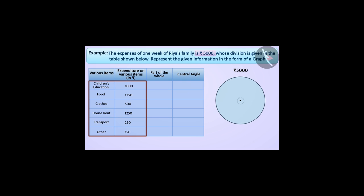The whole here is Rs 5000, therefore in the pie chart the angle of 360 degrees at the centre of the circle will denote Rs 5000. With this understanding, we will find the central angle representing the expenditure on all items. The expenditure on the education of children is Rs 1000, which is 1/5 of the total, so its central angle will be 1/5 of 360 degrees, which equals 72 degrees. Similarly, the expenditure on food is Rs 1250, which is 1/4 of the total, so its central angle will be 1/4 multiplied by 360 degrees, which equals 90 degrees.